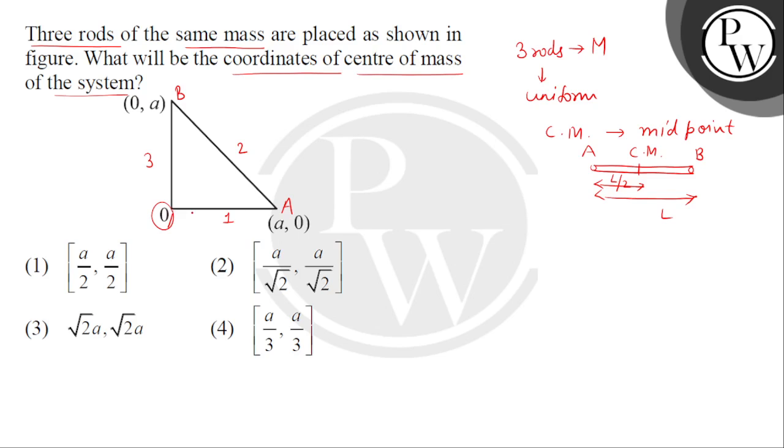So, hum sabse pehle dekhenge joh horizontal rod hai. It means rod 1. So, iska joh center of mass milega. That will be at x coordinate A by 2. So, iska hume x, y order pair coordinate mil jayega A by 2, 0.